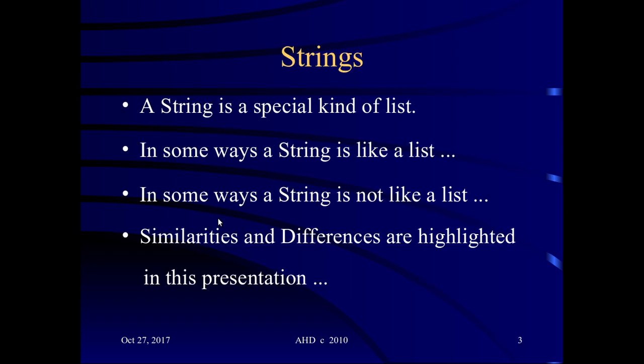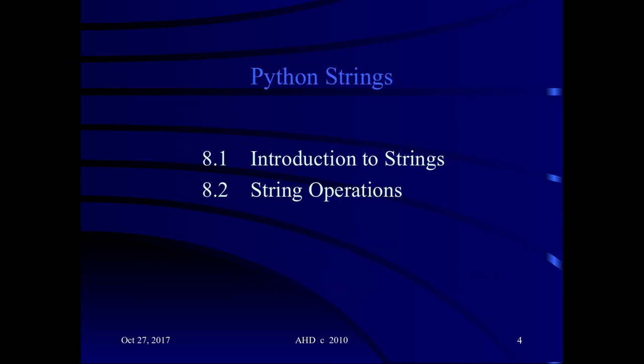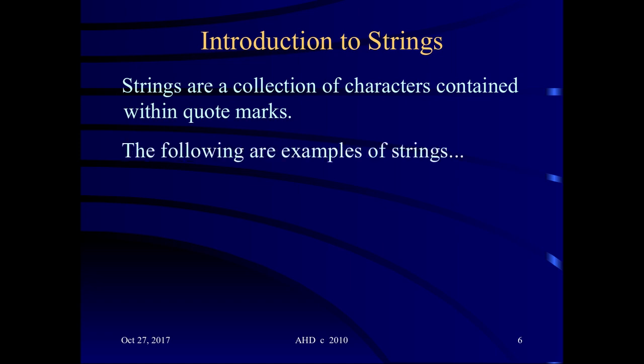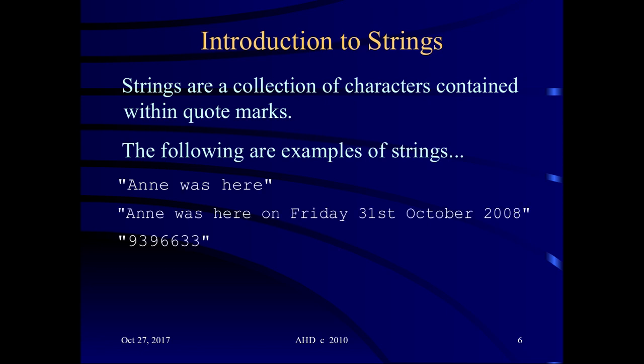Now, a string is a special kind of list. In some ways it's like a list, in other ways it's not, so I will be highlighting differences and similarities in this presentation. Introducing strings: strings are a collection of characters in a sequence, contained within quote marks. These are all examples of strings, including numerical characters.